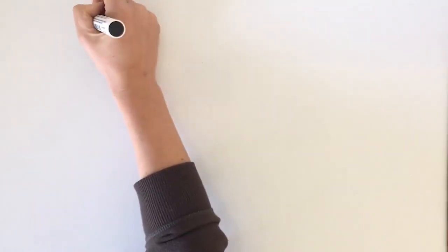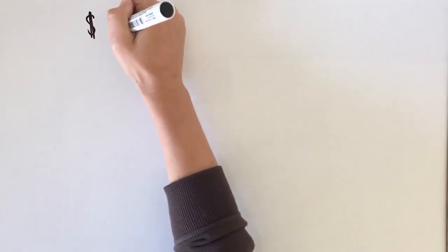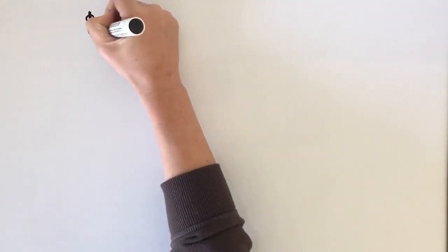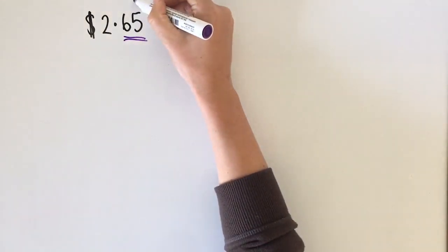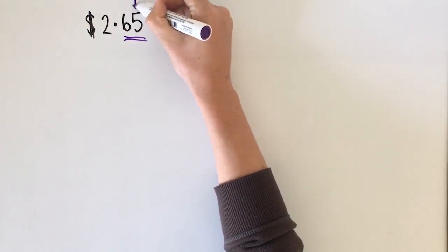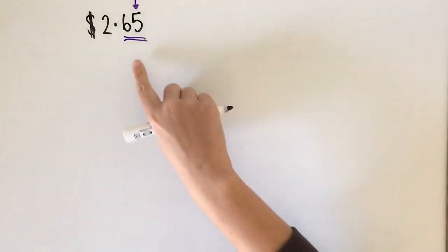When we deal with money we deal with two decimal places. So you might see something like this. That's when we're talking about the fact that there's two decimal places. Now deciding what we round to in terms of the nearest five cents relates to this place here.